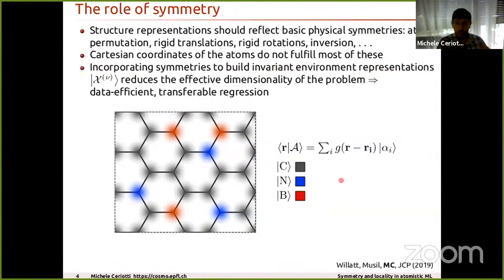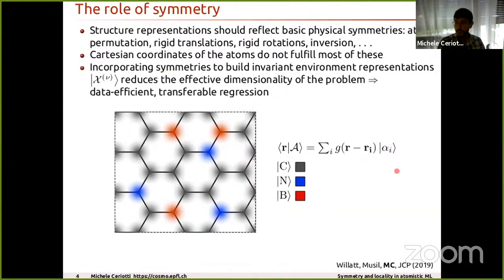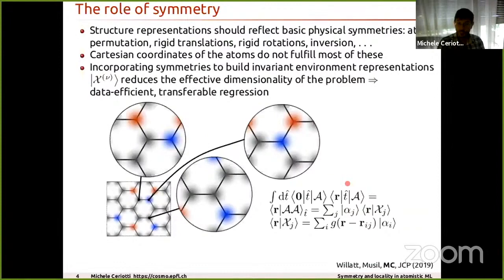A very effective way of achieving permutation invariance is mapping Cartesian coordinates onto a density field built as a superposition of localized Gaussians centered on the atoms. You inform the algorithm whether a given position in space is carbon, nitrogen, or boron by decorating this density with a ket indicating the atomic species — essentially coloring the density by chemical composition. This representation is permutation invariant, but it's not yet translationally invariant.